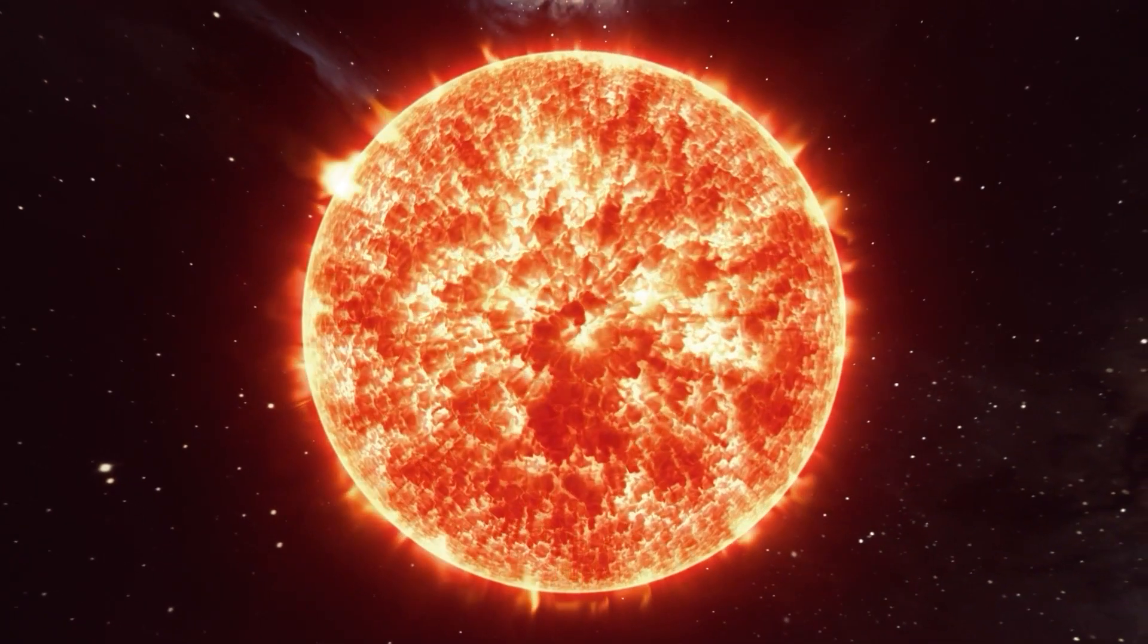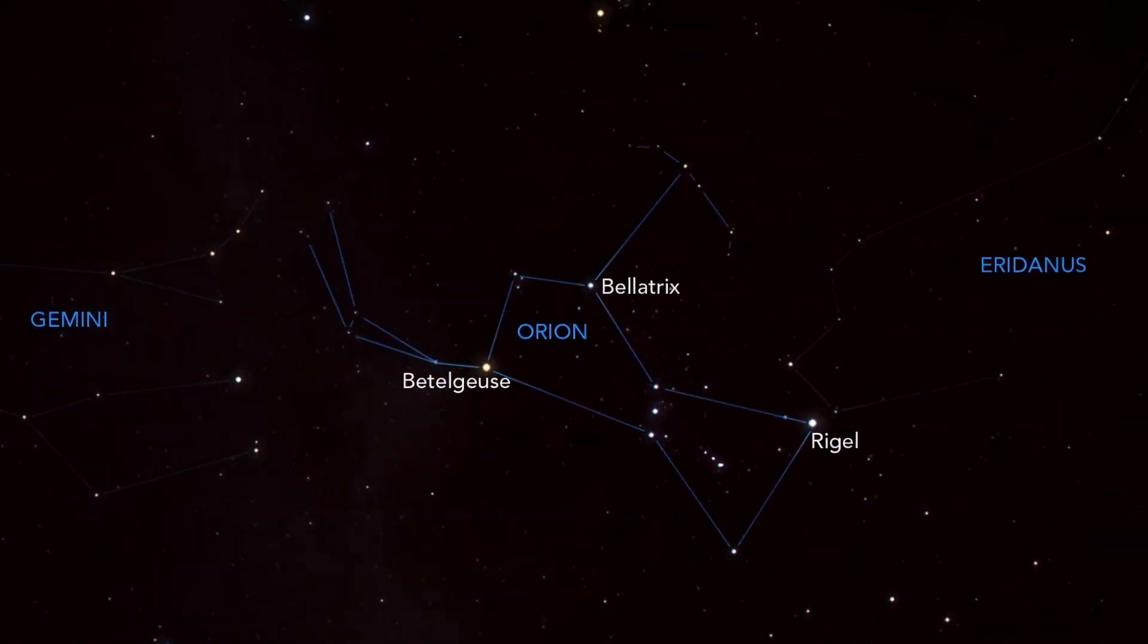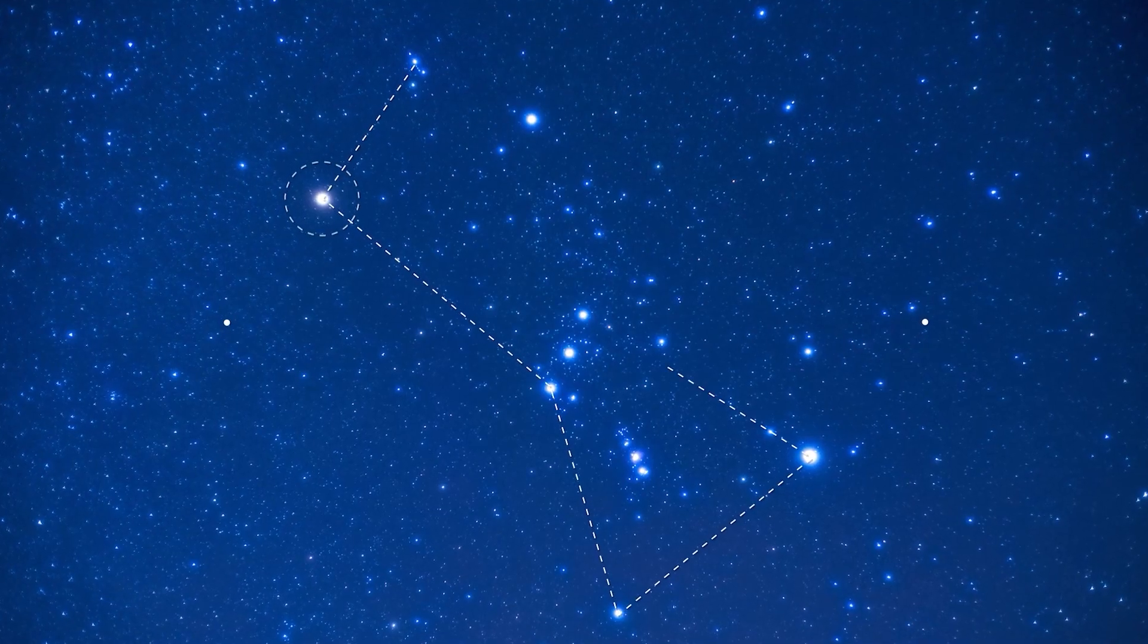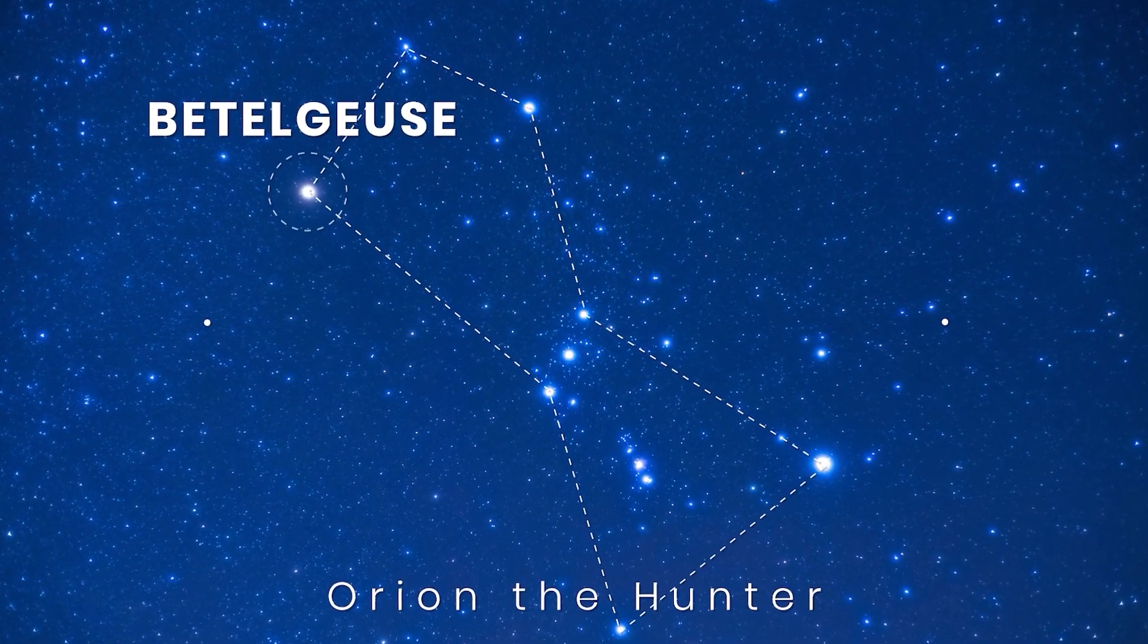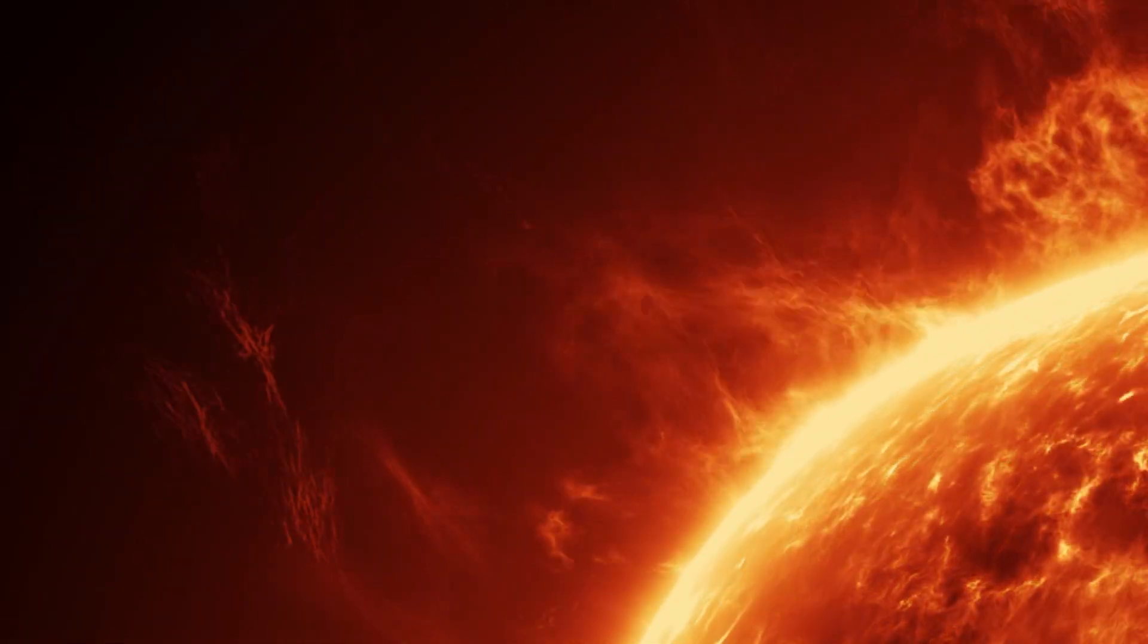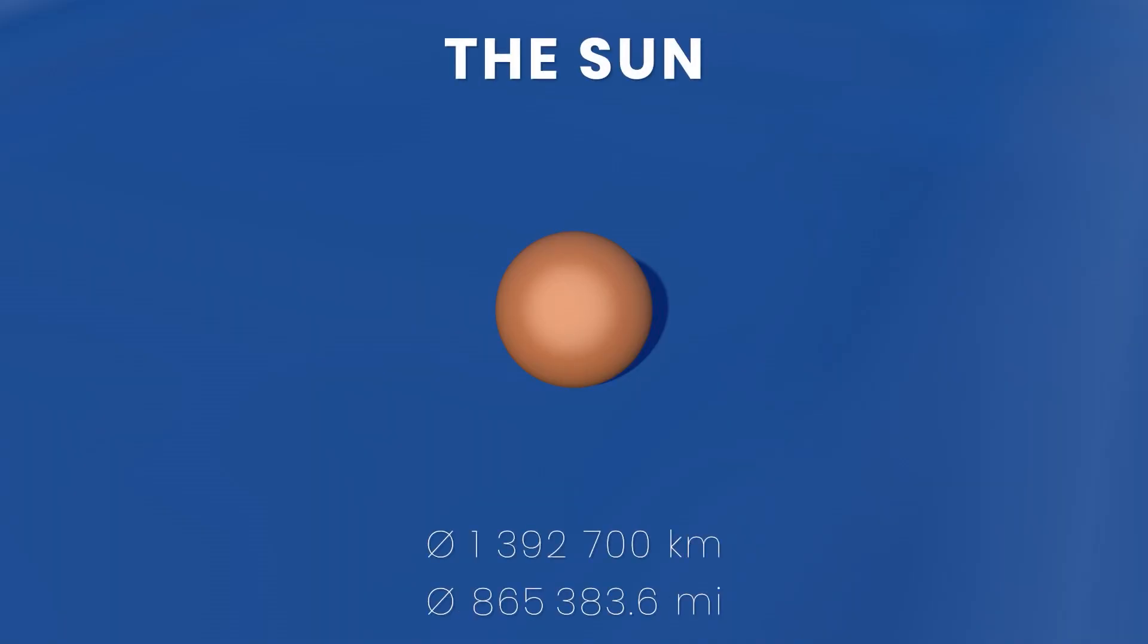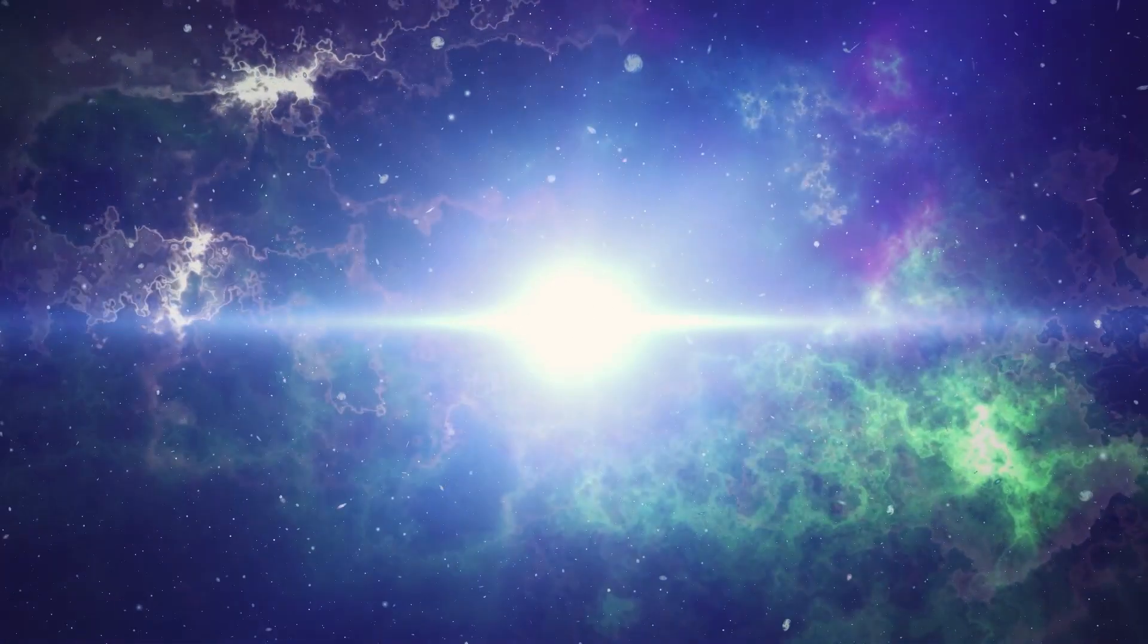One star which could go supernova any day now is Betelgeuse in the constellation Orion the Hunter. Betelgeuse is one of the largest stars known, and is a bright red dot marking Orion's shoulder. This star is a dying red supergiant with a diameter roughly 950 times larger than our Sun. And either today, tomorrow, or 100,000 years from now, it's going to explode, giving humanity a celestial firework show.